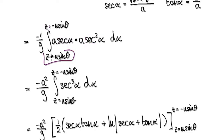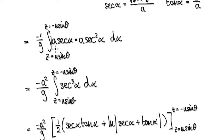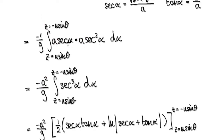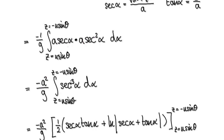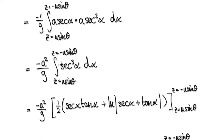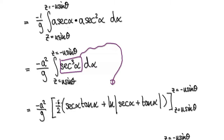Let's tidy this up. You've got A times A, and since A is a constant we can take it out of the integral, giving A squared. Then secant times secant squared is secant to the power of 3. By now I'm expecting you to know how to integrate this — try to memorize it, because the integral of secant cubed crops up quite a lot.